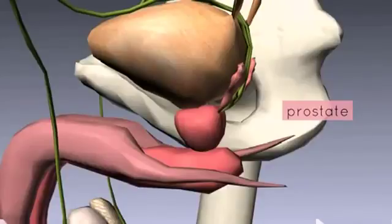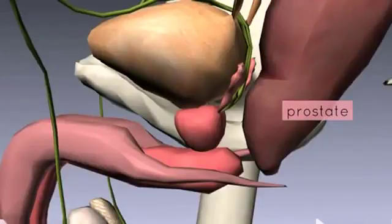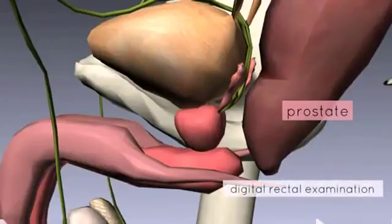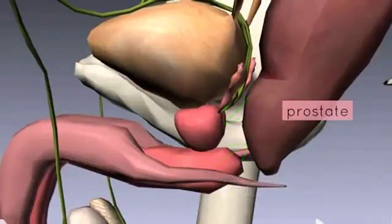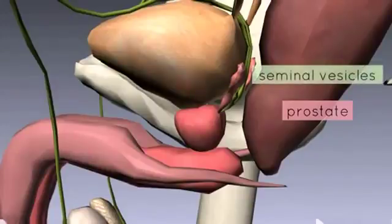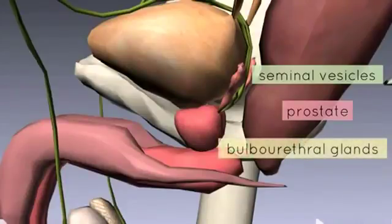The prostate can be palpated through the rectum. In a digital rectal examination, the posterior aspect of the prostate can be felt through the anterior wall of the rectum — an important relationship to know. In the male reproductive system, there are three accessory glands: the two seminal vesicles, the single prostate gland, and two bulbourethral glands.